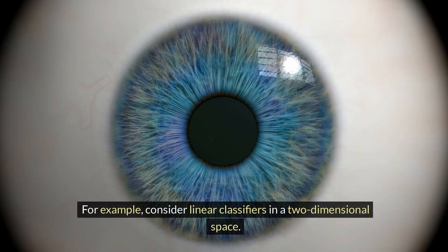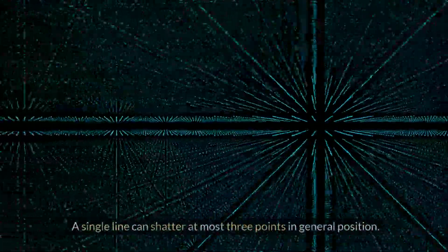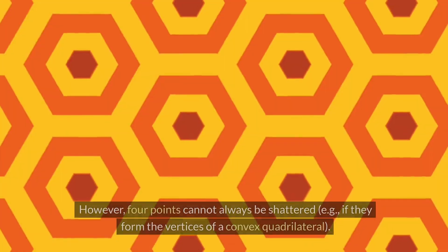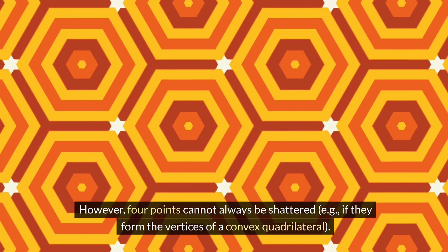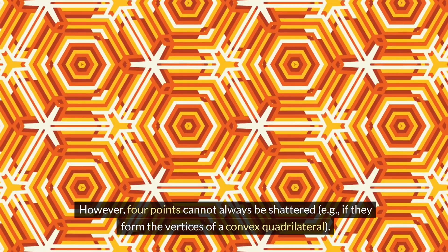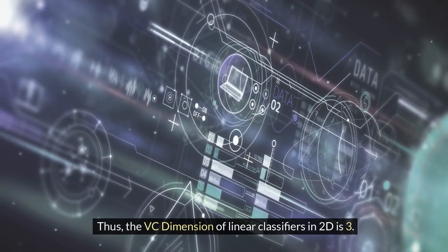For example, consider linear classifiers in a two-dimensional space. A single line can shatter at most three points in general position. However, four points cannot always be shattered, e.g., if they form the vertices of a convex quadrilateral. Thus, the VC dimension of linear classifiers in 2D is 3.